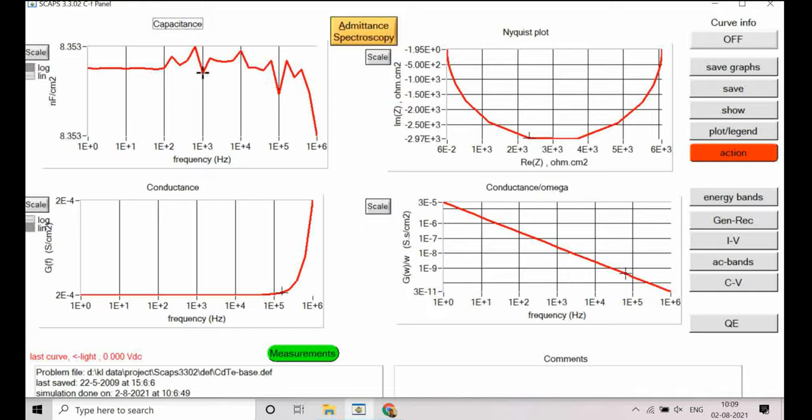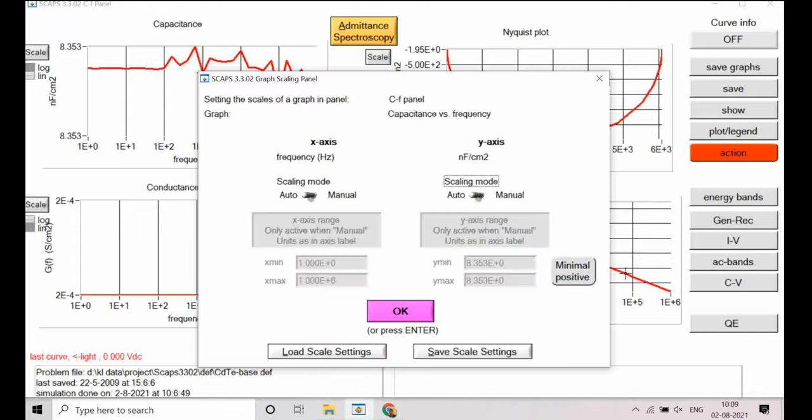So you can see this value is almost same, 8.353 and 8.353. So if we just change this value we can get a correct order. So let me try it.